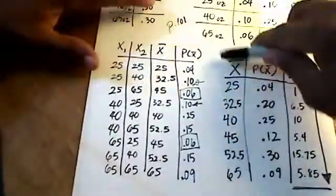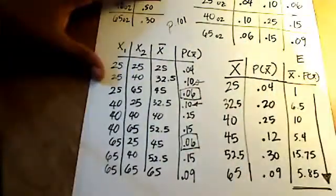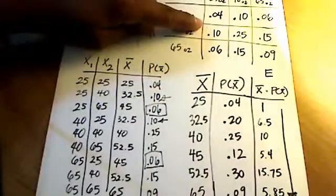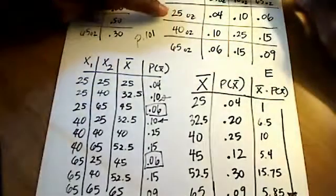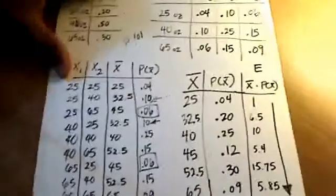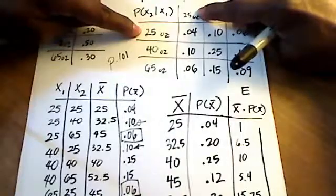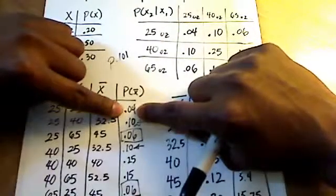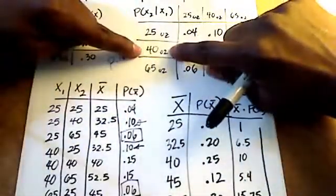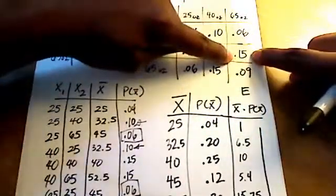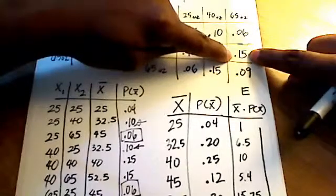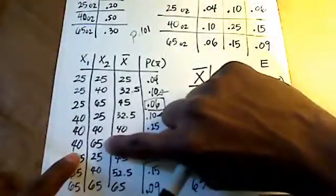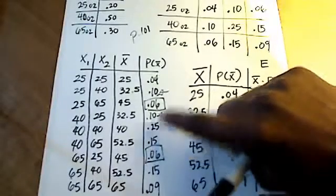This last column here uses the values that I originally came up with in this table up here in the upper right. For example, if somebody chooses 25 and the second person chooses 25, the probability of that happening is 0.04. So that's where this 0.04 is coming from. Let's pick another one: somebody chooses 40 ounces the first time, 65 ounces the second time, and you'll see that probability is 0.15. So there it is right here, 40 and 65, and that probability is 0.15. That's where I'm getting all of these values in this last column from.